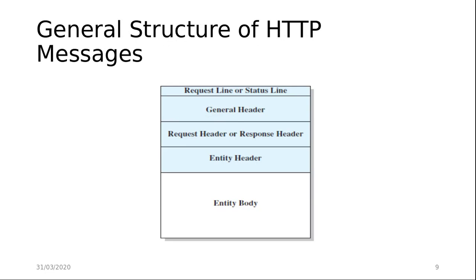The general structure of HTTP messages consists of: first, a request line or status line; second, a general header; third, a request header or response header; fourth, an entity header; and last, an entity body. HTTP consists of two types of messages: requests from the client to the server, and responses from the server to the client. The best way to describe the functionality of HTTP is to describe the individual elements of the HTTP message.